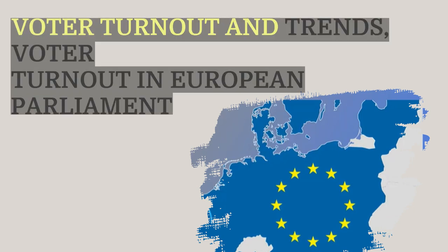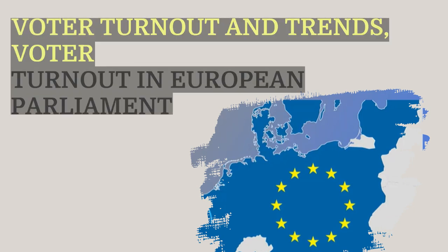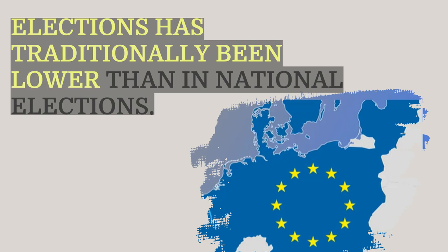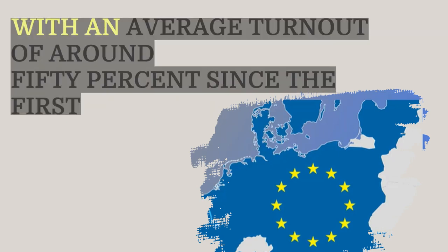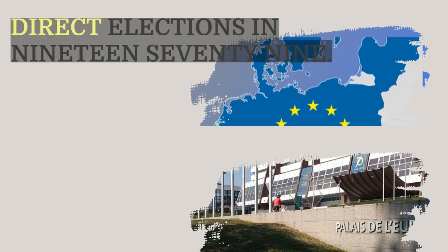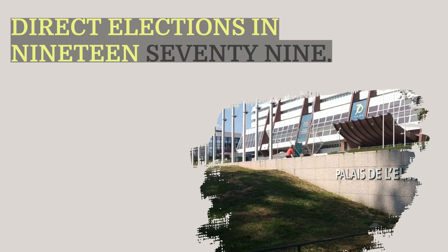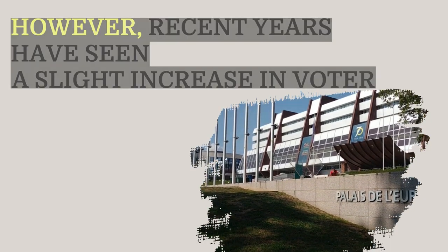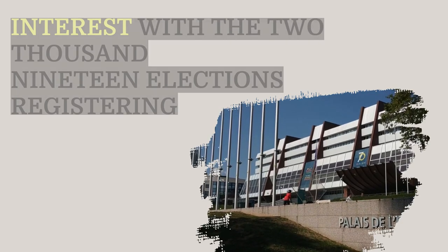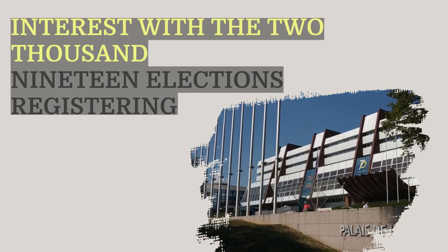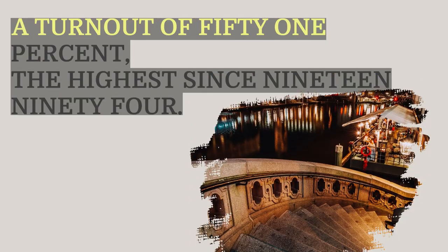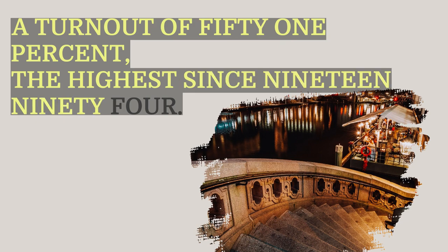Voter turnout in European Parliament elections has traditionally been lower than in national elections, with an average turnout of around 50% since the first direct elections in 1979. However, recent years have seen a slight increase in voter interest, with the 2019 elections registering a turnout of 51%, the highest since 1994.